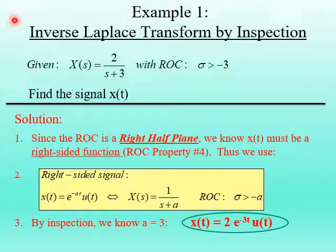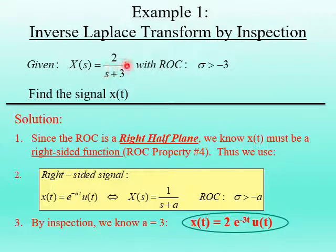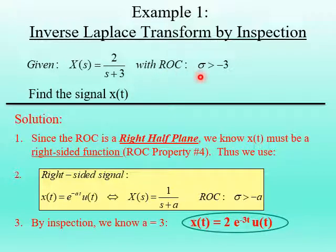In this first example, we are going to perform an inverse Laplace transform by inspection of the Laplace transform given here: X(s) is equal to 2 over s plus 3. We have to be given the region of convergence. In this case, we are given that sigma is greater than negative 3. Our goal is to find the signal x(t) associated with this Laplace transform.